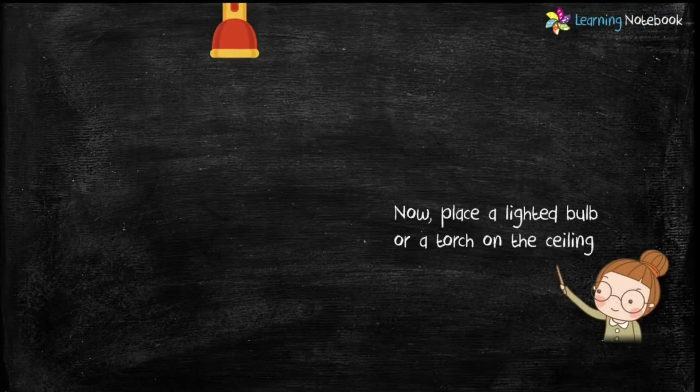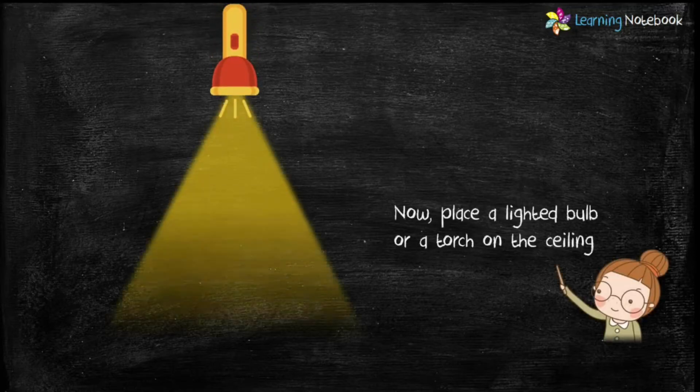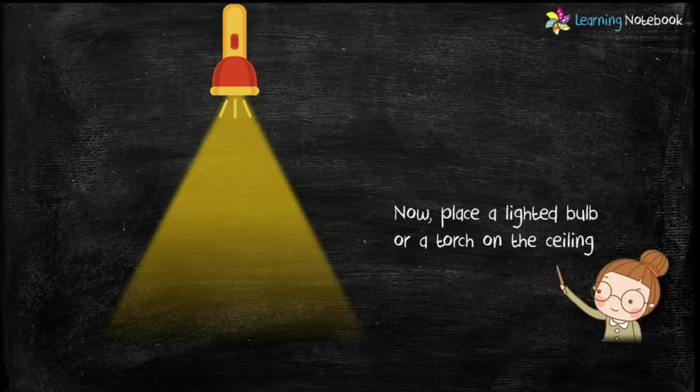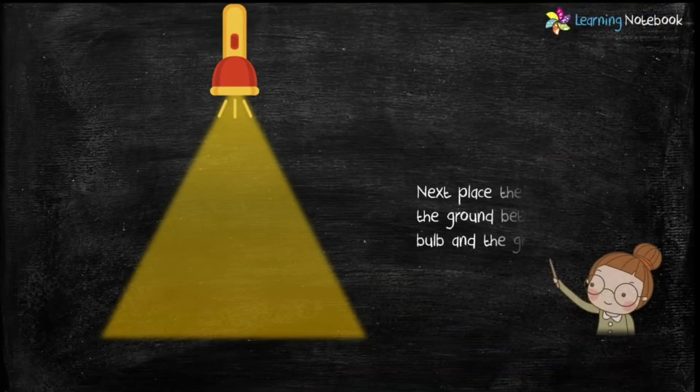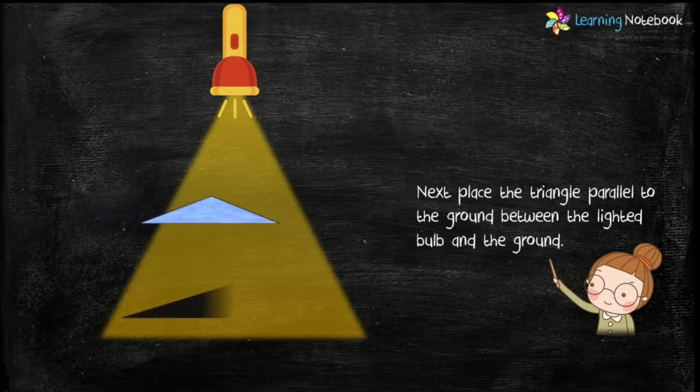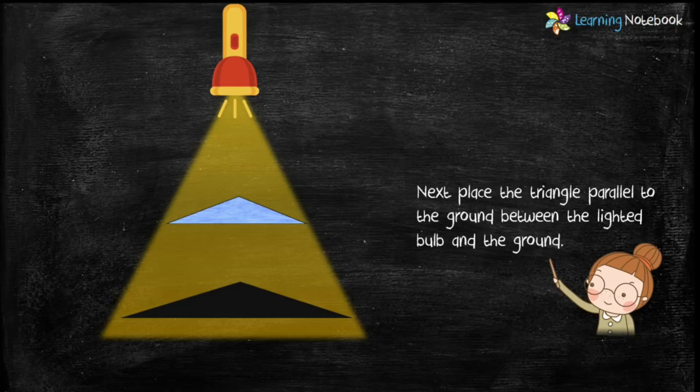Now students, place a lighted bulb or a torch on the ceiling. Now, place the triangle parallel to the ground between the lighted bulb and the ground. Now we can see an enlarged shadow of this triangle.